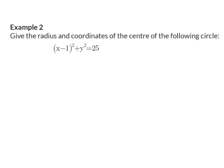In example 2, we are asked to give the radius and the coordinates of the center of the circle from a given equation. We just need to know the standard form of the equation. To get the center, we find the values of A and B. In this case, the center is at (1, 0). The radius squared is 25, so the radius is the square root of 25, which is 5.